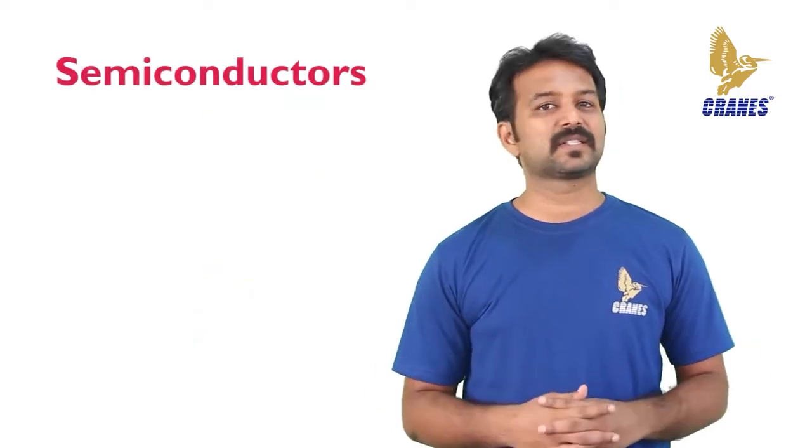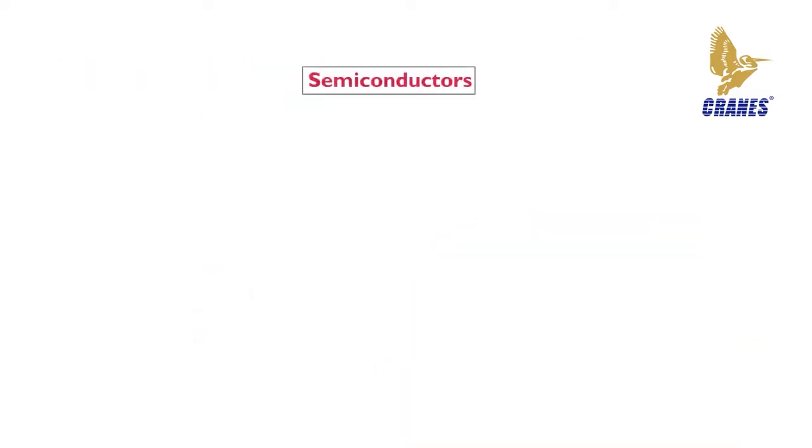Let's discuss semiconductors. A semiconductor is a material that is between conductors and insulators in its ability to conduct electrical current. A semiconductor in its pure state, which is intrinsic state, is neither a good conductor nor a good insulator.